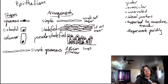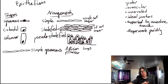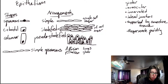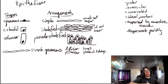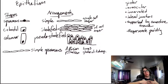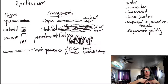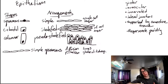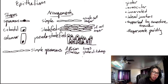You also find simple squamous epithelium in the glomeruli of the kidneys, where blood is filtered. And in capillary beds, where nutrients and oxygen from the blood are passed to the tissues and the blood picks up waste products in exchange.